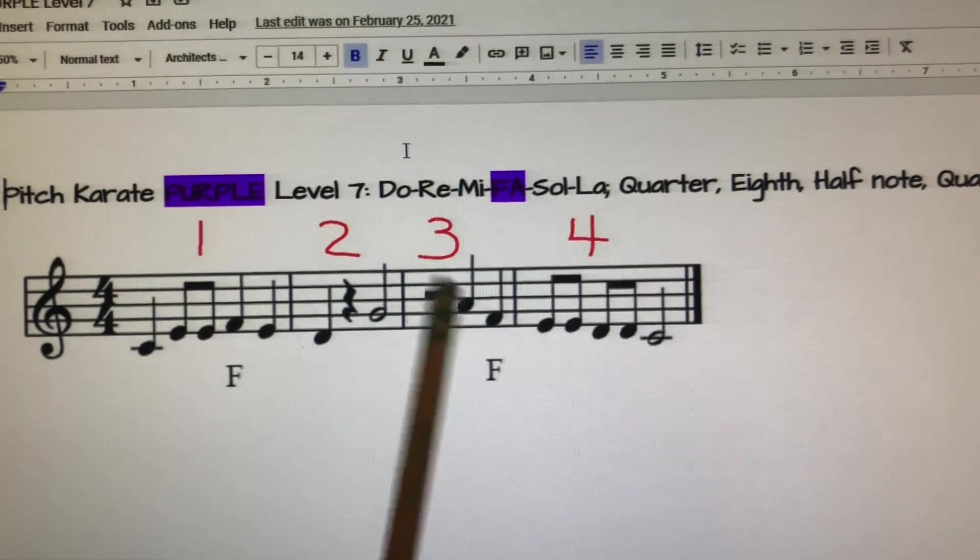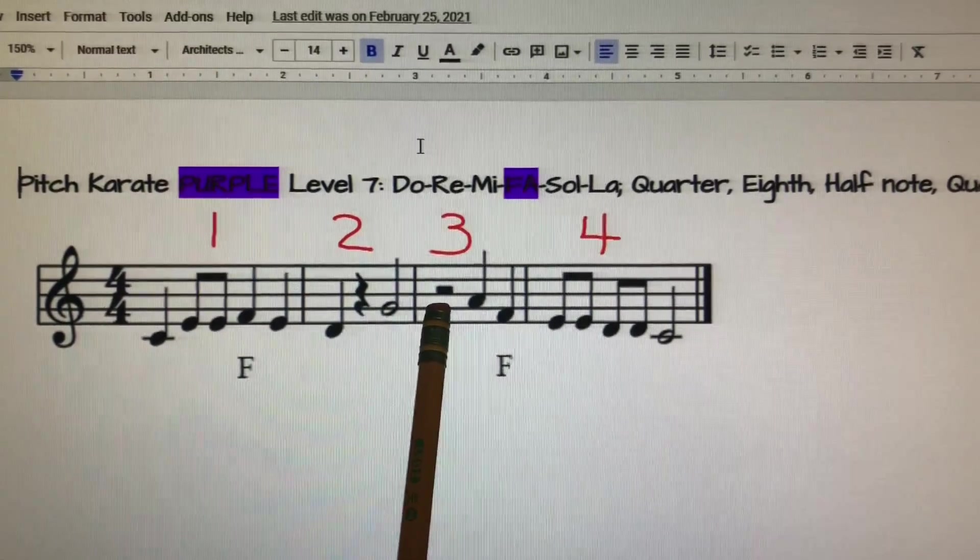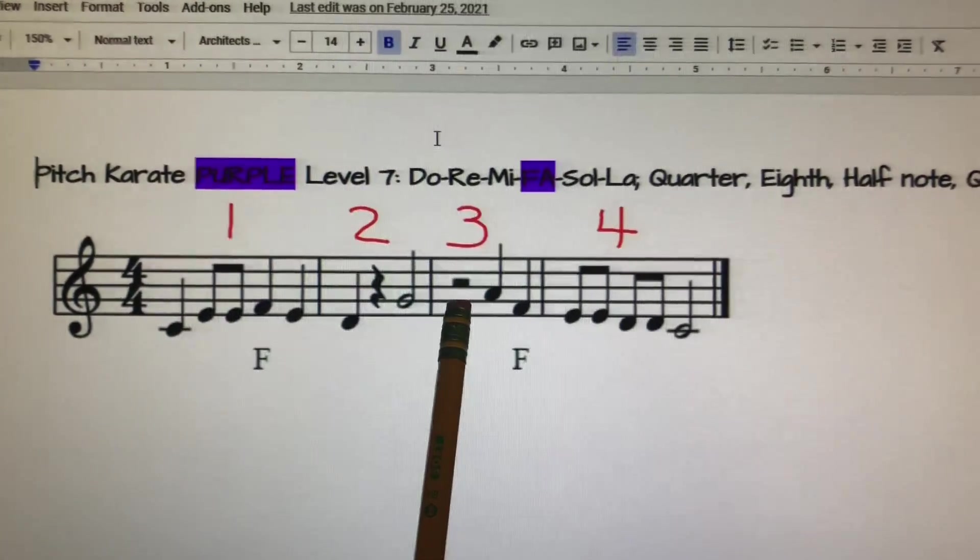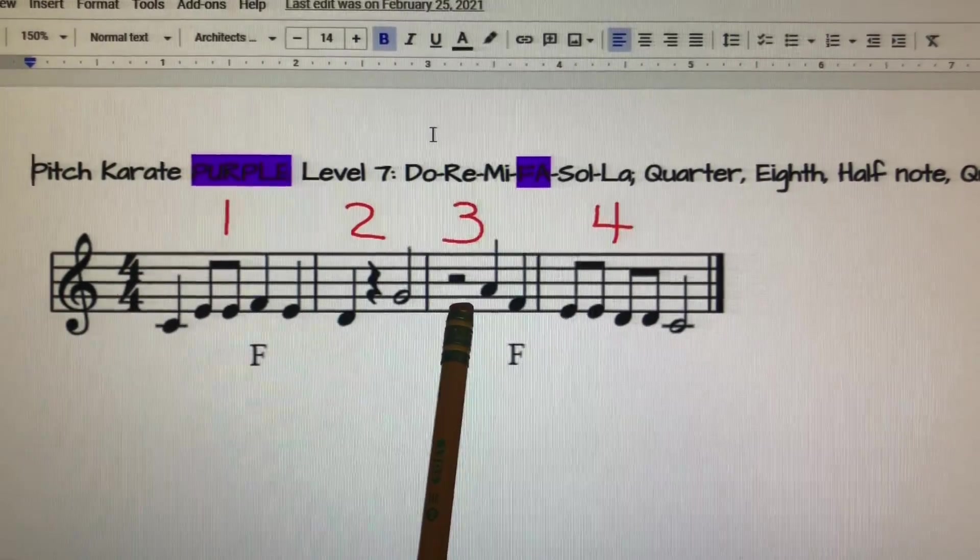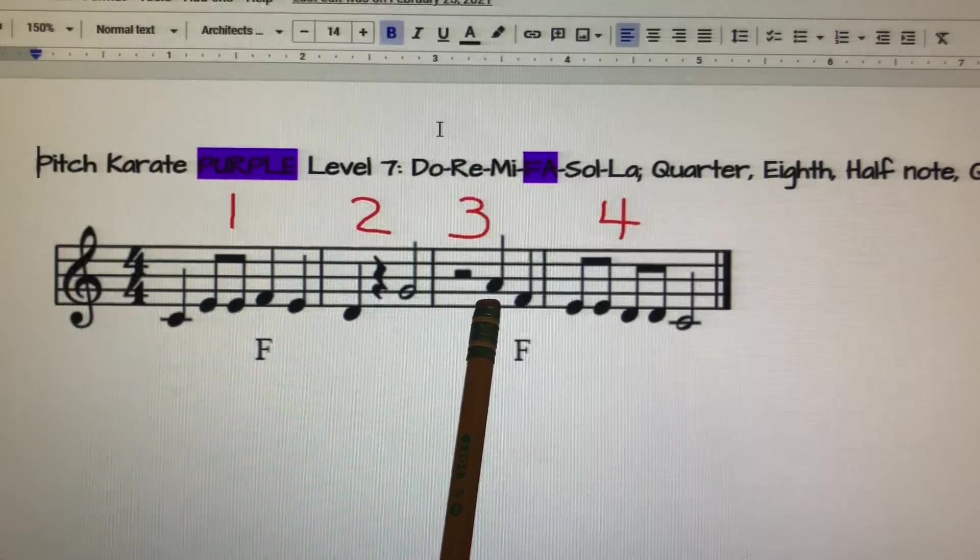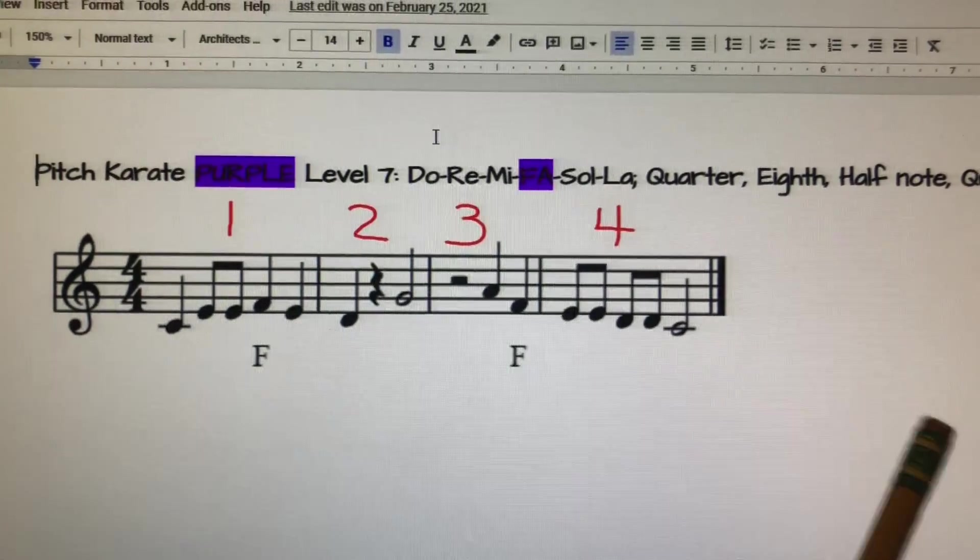Moving on to measure three. We start off with a half rest. That's a rest for two beats. And then we have the syllable La and Fa. So it'll go: Sh, Sh, La, Fa. Your turn.